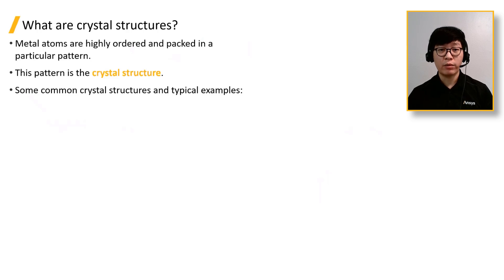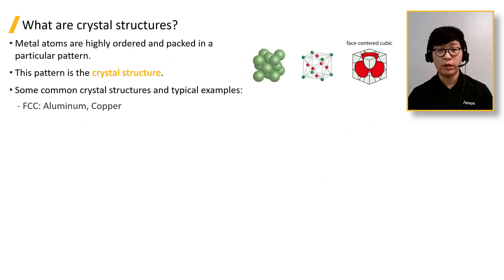Some common crystal structures and typical examples include the face center cubic FCC, which is found in aluminum and copper, or body center cubic or BCC, which is found in iron.